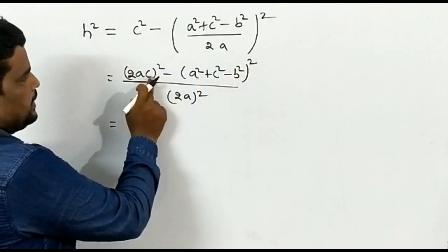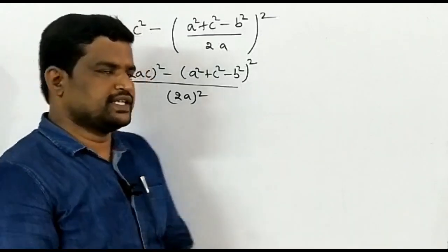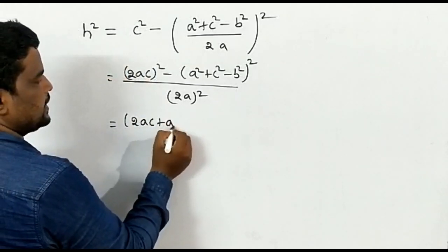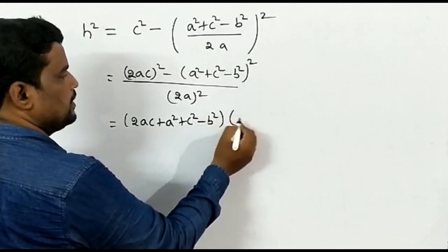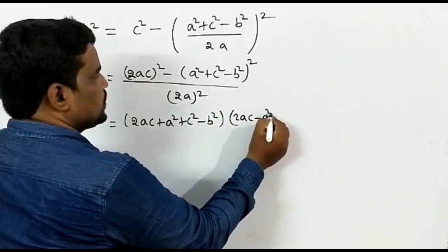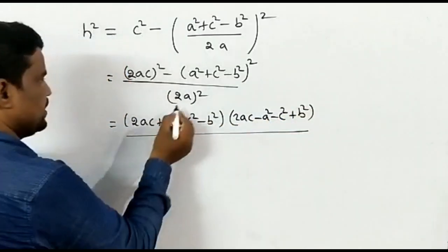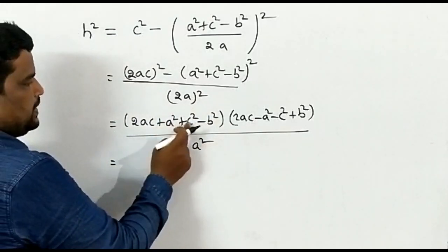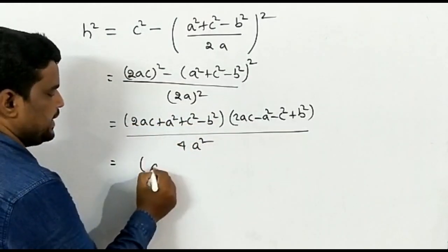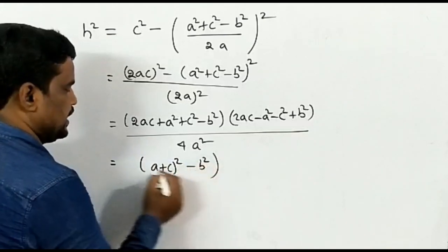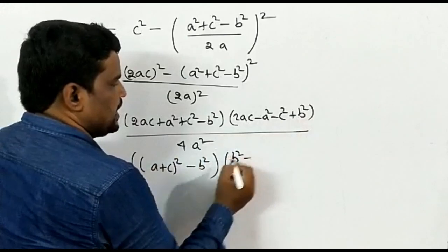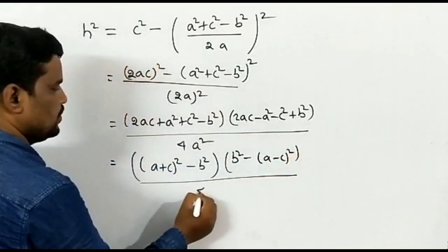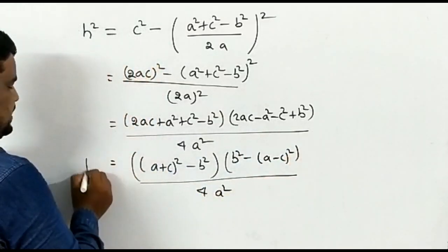Applying the algebraic identity a² − b², we factor the numerator to get: [2AC + (A² + C² − B²)] × [2AC − (A² + C² − B²)] / 4A². This simplifies to: [(A+C)² − B²] × [B² − (A−C)²] / 4A².